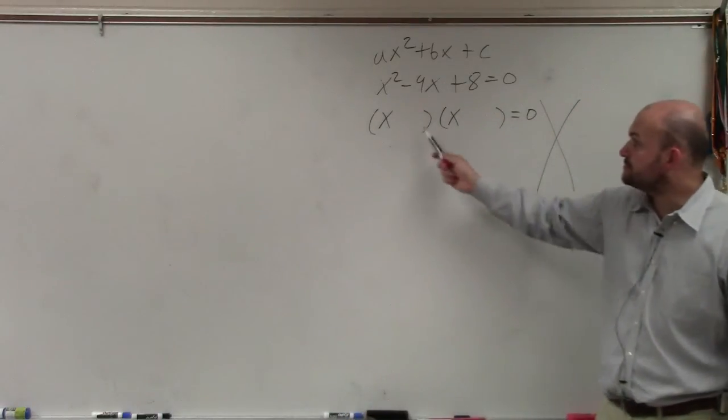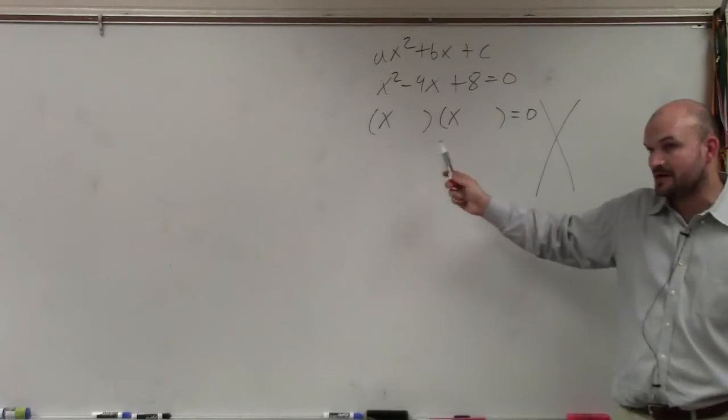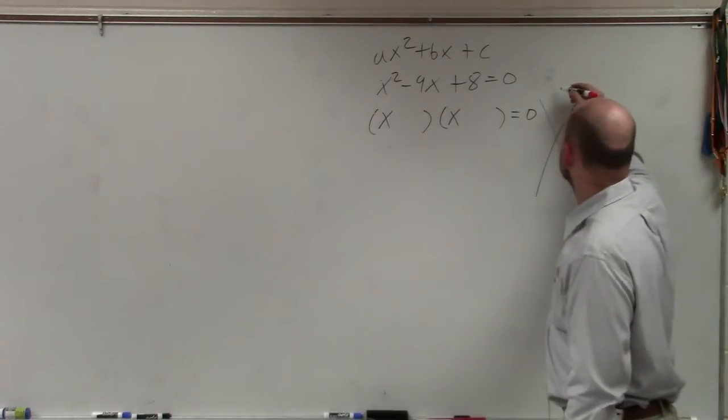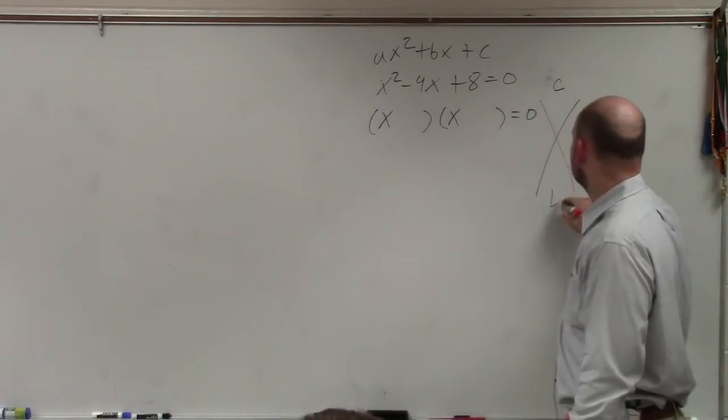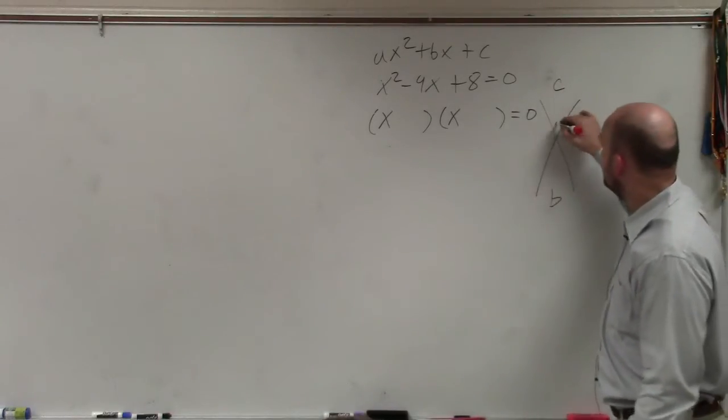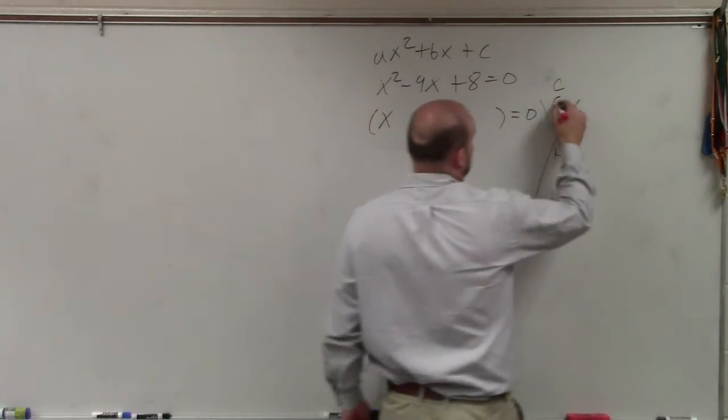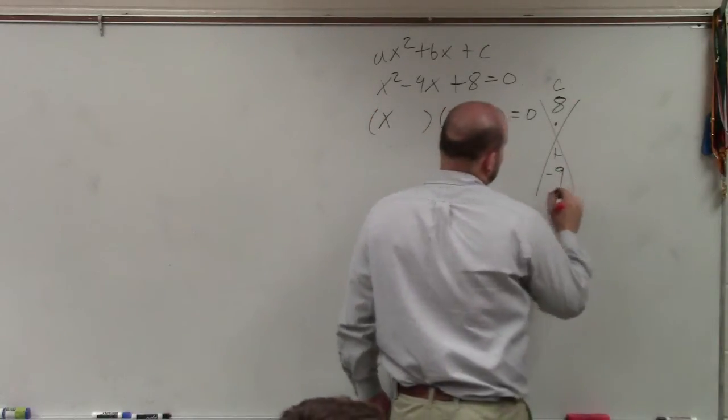So basically what we need to do is figure out what these other two values are. An easy way to visualize that is to determine what two values multiply to give you c and then add to give you b. So we look at c, and that's 8. And we look at b, and that's negative 9.